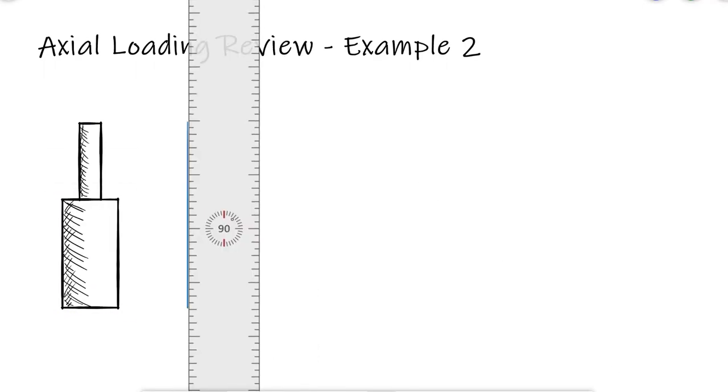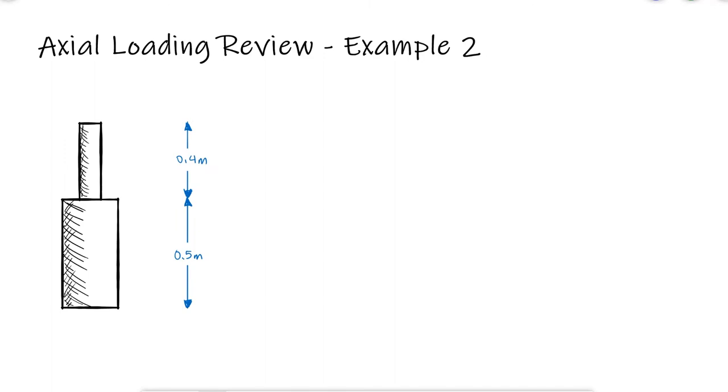Both sections of the rod ABC are made of aluminum. Knowing that the load P is 4 kN, what would the magnitude of load Q be so that the deflection at A is zero? Additionally, what would the deflection of B be?